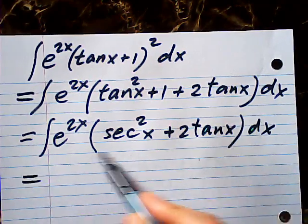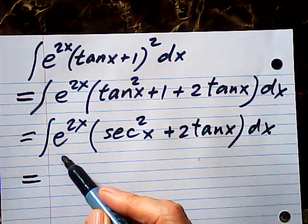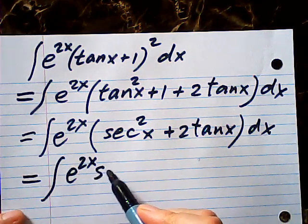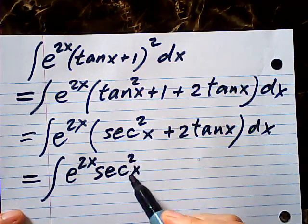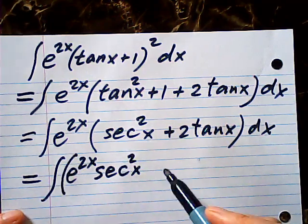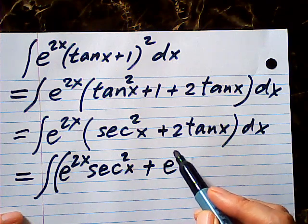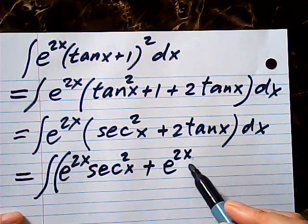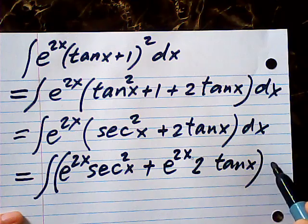Then I have two terms, which is e to the 2x times secant square x plus e to the 2x times 2 times tangent x dx.